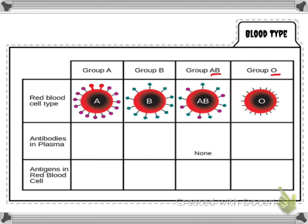So if I'm A type blood, what kind of antibodies must I have? These would be in my plasma that are fighting off the opposite blood antigens. That's right — I would have anti-B, so it's going to attack B. These would probably look something like this so that they would actually attack this little triangle shape. So if I'm B type blood, then I've got anti-A in my antibodies, which would have this sort of curvy shape to grab onto those circles. Keep in mind, they're not really circles and triangles — I'm just making it look like that so you can kind of see it.